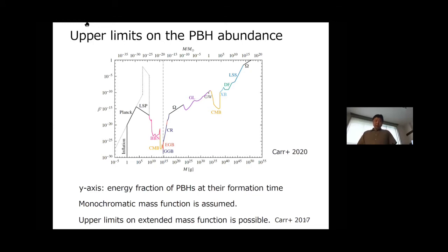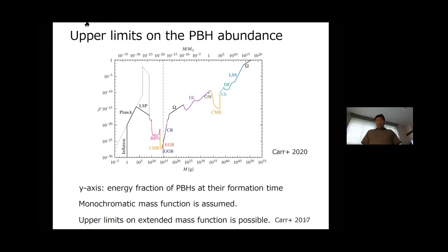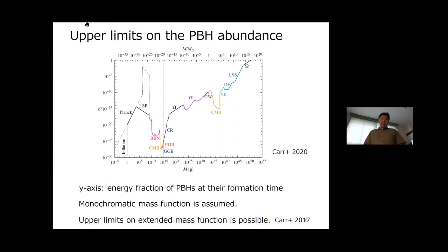That is why the upper limit on beta is much less than unity for the dominant range of PBH mass. In this plot a monochromatic mass function is assumed — all primordial black holes have the same mass, which is the simplest case and a first step to consider, though not the realistic situation. In reality the mass function may have some width, but it is possible to translate these upper limits to the extended mass function case using a procedure presented in a recent Carr paper.